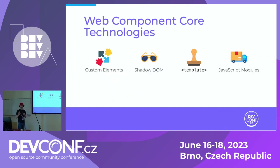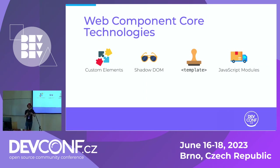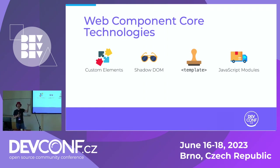There are four core technologies in web components. We have custom elements — a custom element is basically an HTML element defined by your JavaScript class. Like the video element has certain behaviors, controls, and slots for sources, you can write your own class in JavaScript to define a fancy video or a fancy input, associate that with a tag name, and anytime that tag name appears in your document, the web browser will instantiate that object on the DOM with your class.